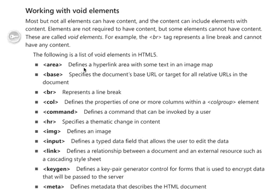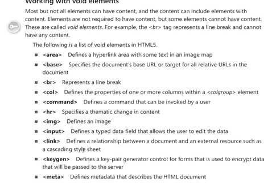Here's a list of void elements in HTML5. The area tag defines a hyperlink area with text in an image map. Base specifies the document's base URL or target for all relative URLs. BR represents a line break. Col defines the properties of one or more columns within a col group element. Command defines a command that can be invoked by a user. HR specifies a thematic change of content using a horizontal line. IMG defines an image. Input defines a type of data field that allows users to enter or edit data.